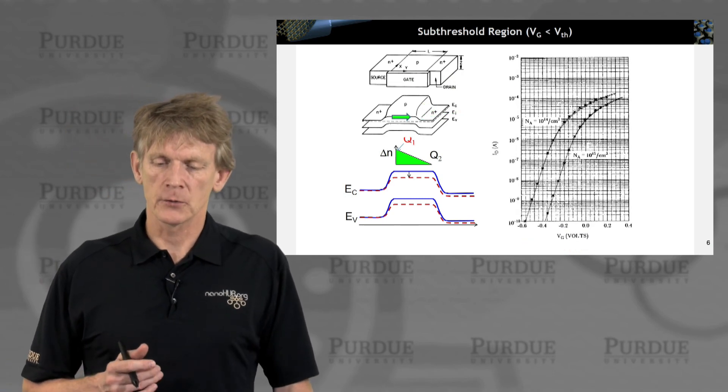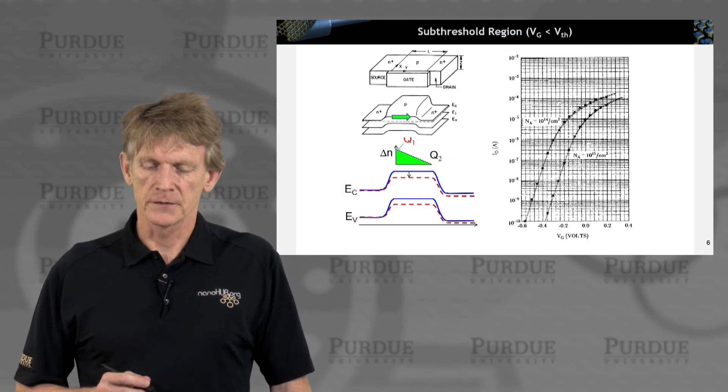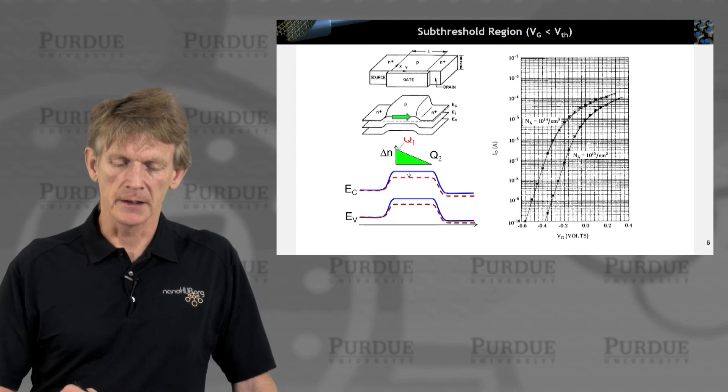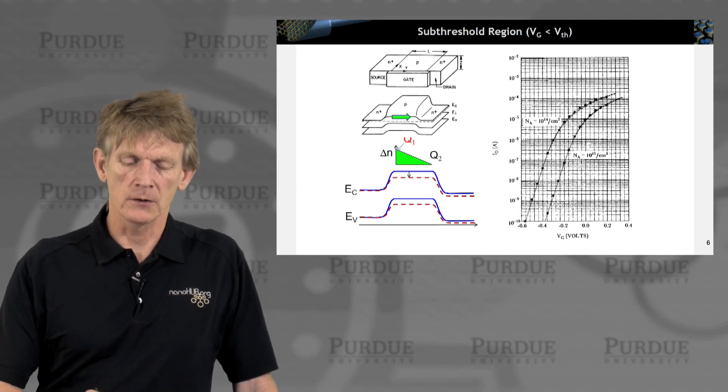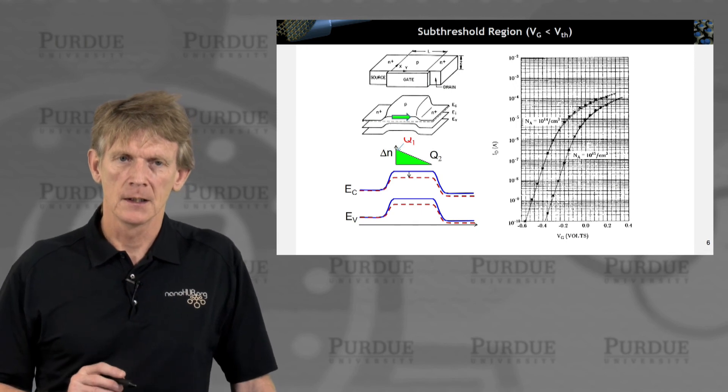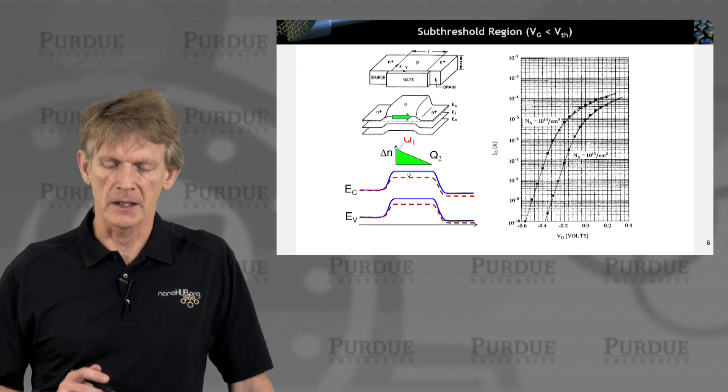And here we are. Here are some curves of drain current as a function of gate voltage from the textbook. And here are the slopes that we just described. So, this is going down over orders of magnitude. It goes down as a constant linear term on a log scale.